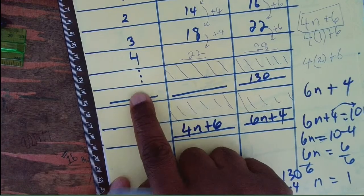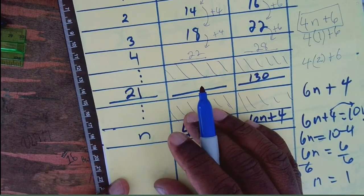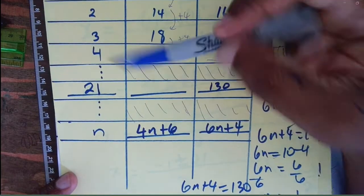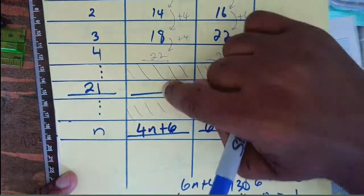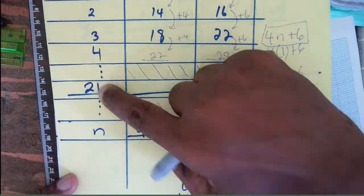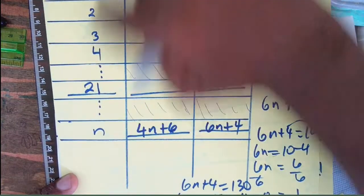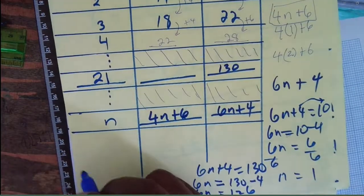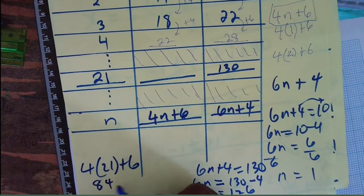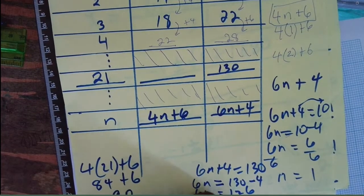So the 21st term is 130. Now I can use n = 21 in the other formula. In this case n is 21, so 4 times 21 gives 84, plus 6 is 90.